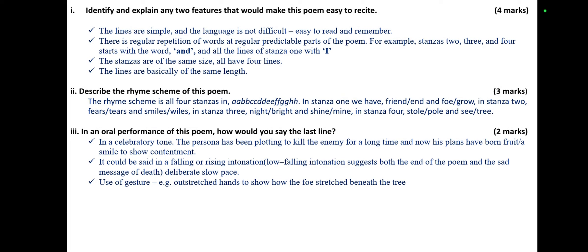Question Three: in an oral performance of this poem, how would you say the last line? It would be said in a celebratory tone — the persona has been plotting to kill the enemy for a long time and now his plans have borne fruit. A smile to show satisfaction. It could be said in a falling or rising intonation — low, which is falling intonation, suggesting both the end of the poem and the sad message of death. Deliberate, slow pace. Use of gestures — for example, outstretched hands to show how the foe stretched beneath the tree.